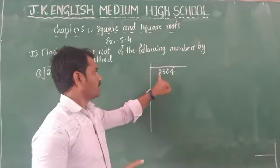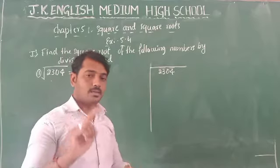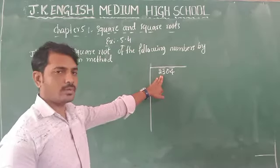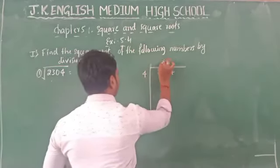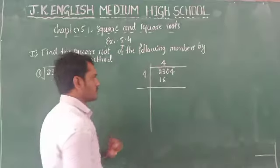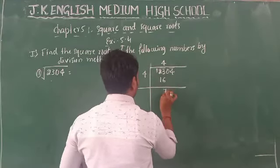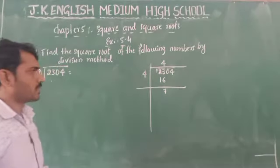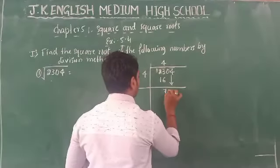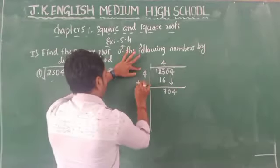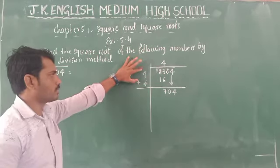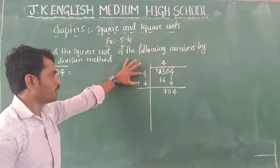We check: 2×2=4, 3×3=9, 4×4=16, 5×5=25. Since 25 is more than 23, we take 4×4=16, which gives us 16. So we write 4 as the first digit of the answer. We subtract 16 from 23, and bring down the next group. Now, double the quotient: 4+4=8, giving us 8 as the next divisor prefix.